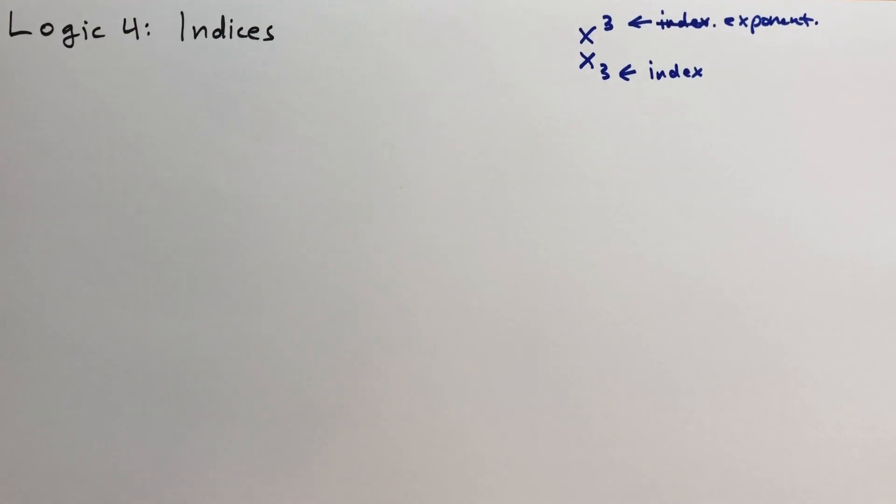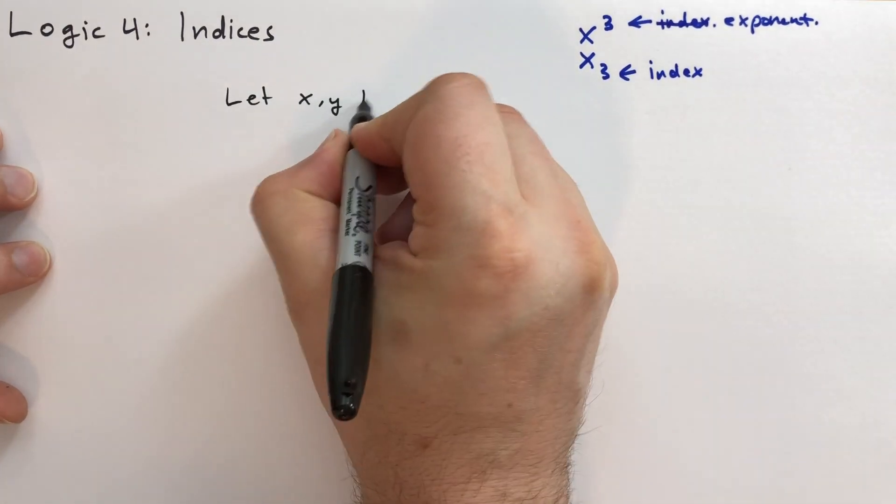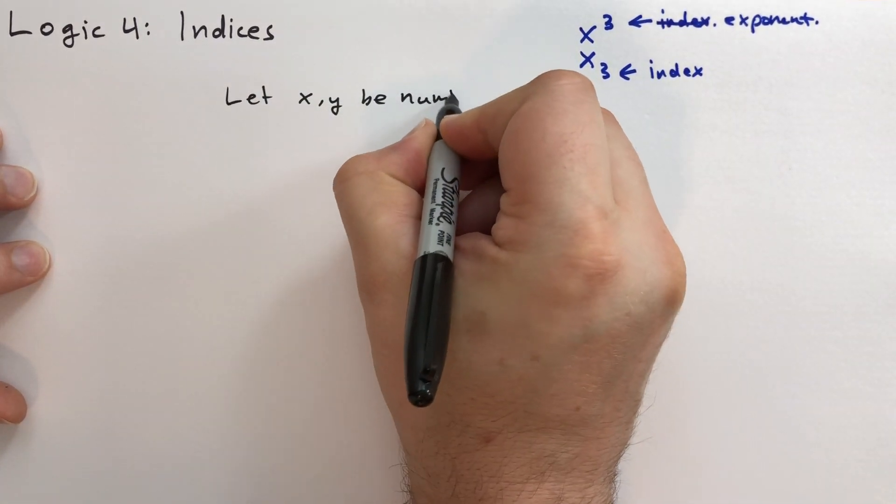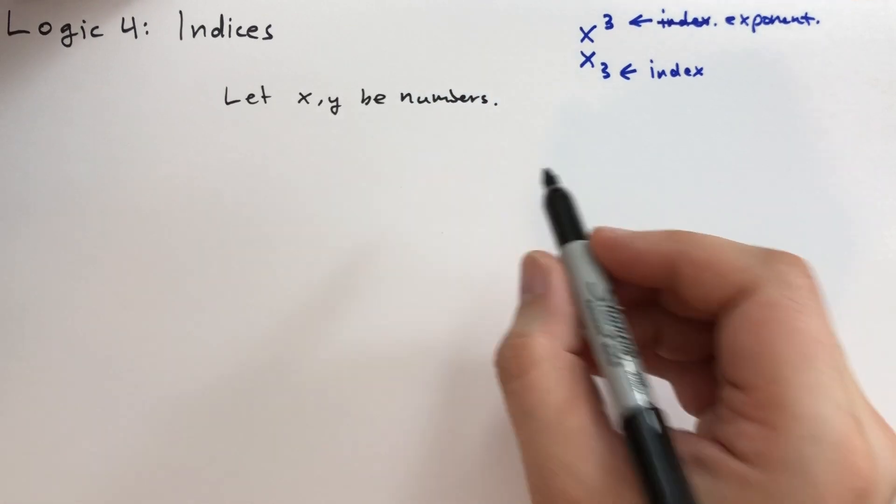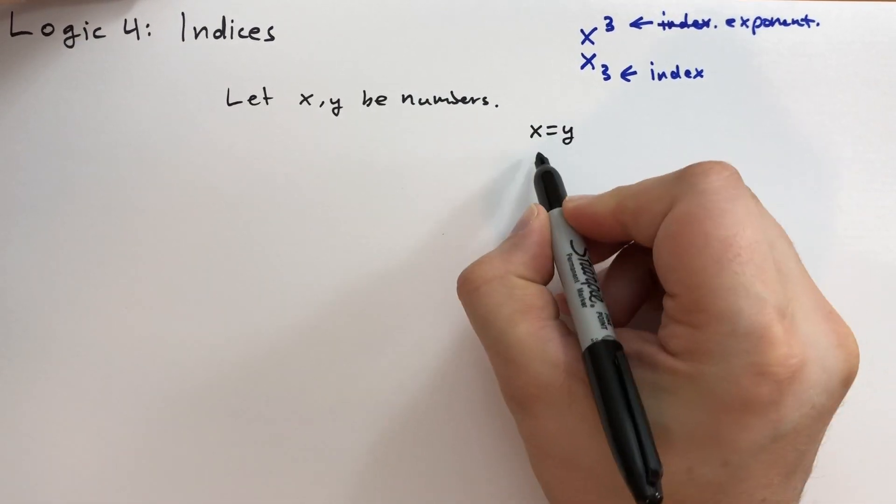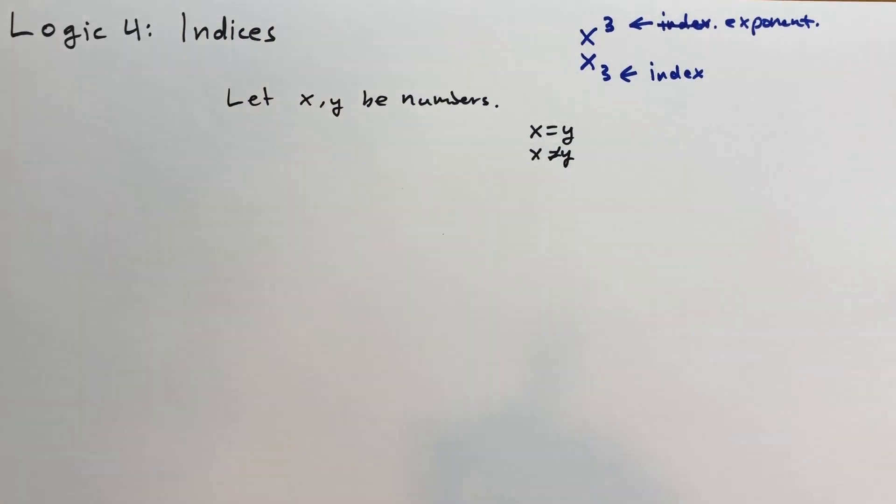Now he introduces this topic this way. He says, let's start with this statement. Let x and y be numbers. So we do that a lot, right? And when we say this, it could be x equals y. It could be that x doesn't equal y. We haven't said anything about the relationship between these two numbers.